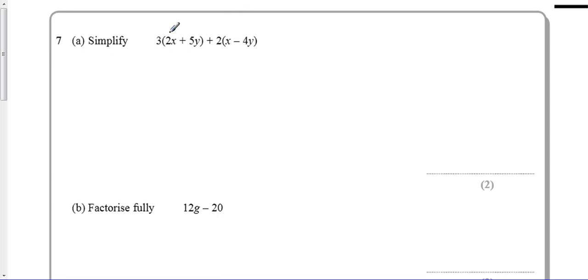Okay, so it says simplify, so we've got to do a little bit of multiplication here. Let's do this one. 3 multiplied by 2x gives me 6x, 3 multiplied by 5y gives me 15y. And if I do this one here, 2 times x gives me 2x, 2 times minus 4y gives me minus 8y. So at the moment those two things are the same. If I just finish there it'll give me a mark, but I want to collect these bits together. So 6x and add 2x is 8x, 15y minus 8y is 7y, and that's my final answer.